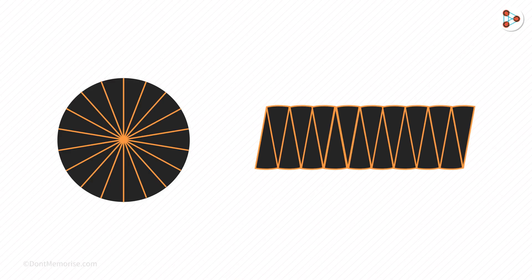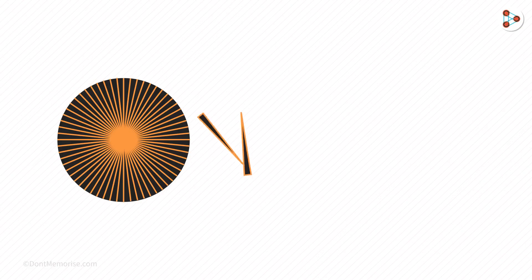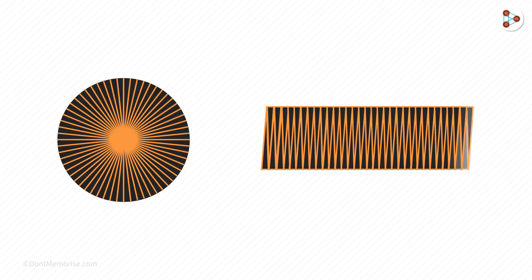If we take these sectors and keep them vertically, then the figure will look somewhat like this. And if we divide the circle into more sectors and keep figures like this, then the combined figure will look like this.